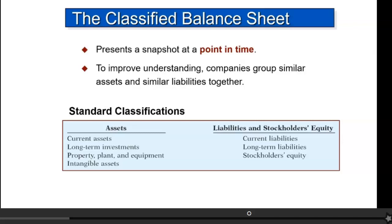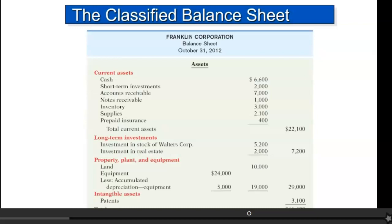Here we have the balance sheet for Franklin Corporation. Notice the assets in the four categories — current assets in red, long-term investments, property plant and equipment, and intangible assets. You see them listed, with the totals in the right-hand column: current assets $22,100, long-term investments $7,200, $29,000, and $3,100. For more detail, move into the inside column, and there's the list of current assets.